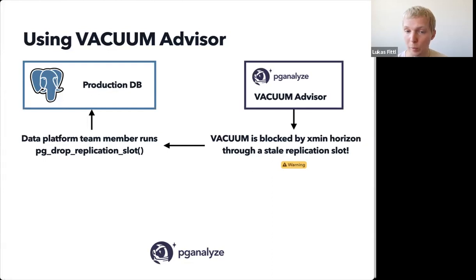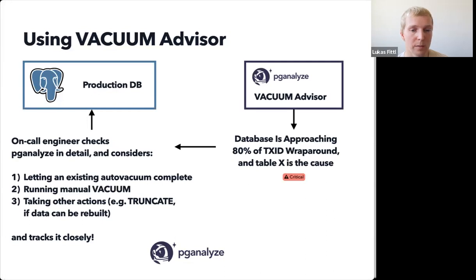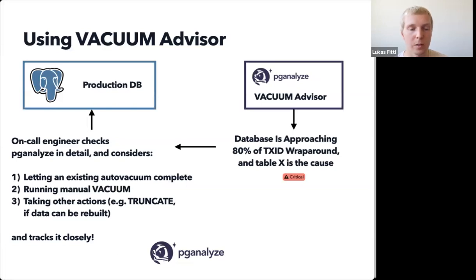Another example: pganalyze can alert you when your vacuums are being blocked by the X-Men Horizon through stale replication slots. This is the most puzzling and frustrating experience when you don't know about it and your vacuum just doesn't do anything. A data platform team member, for example, could drop a pg replication slot that was left by accident from a migration. And the most urgent thing: if everything fails regarding freezing, your database in the worst case will shut down to prevent transaction wraparound. Vacuum Advisor can tell you which table is the cause, and an on-call engineer can then understand what's blocking things and take action like running manual vacuums.